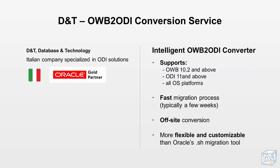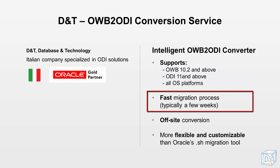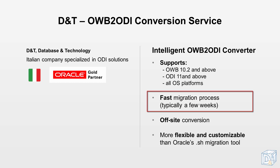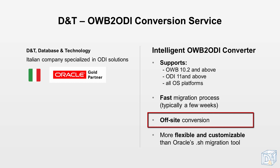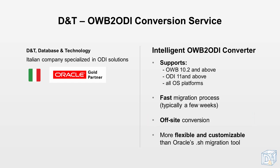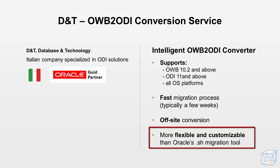Using this converter will speed up the conversion, ensuring a fast migration process. One of our customers, for example, was able to convert 2,300 OWB mappings to ODI in a matter of weeks. The conversion itself is done remotely at DNT's, with some on-site consultation, testing and custom ODI development if this appears to be necessary. Our tool provides a higher degree of flexibility and more customization possibilities than Oracle's own migration tool.